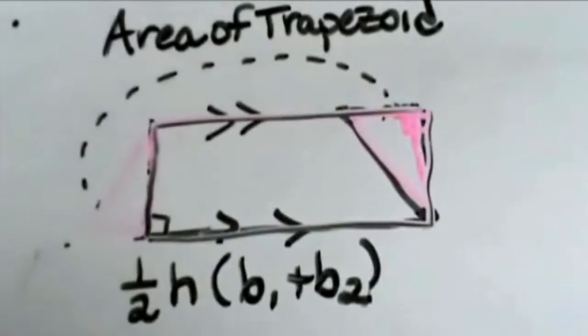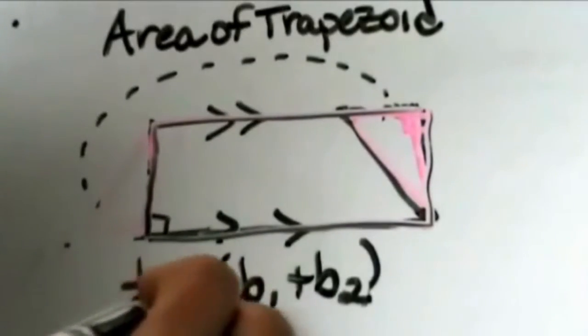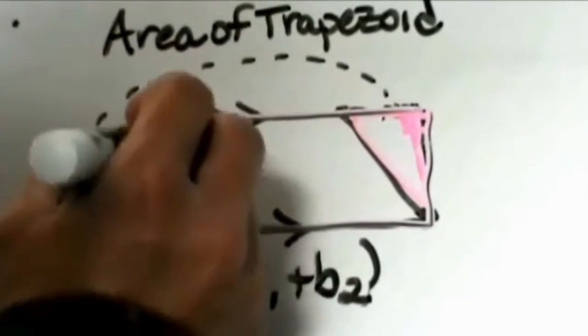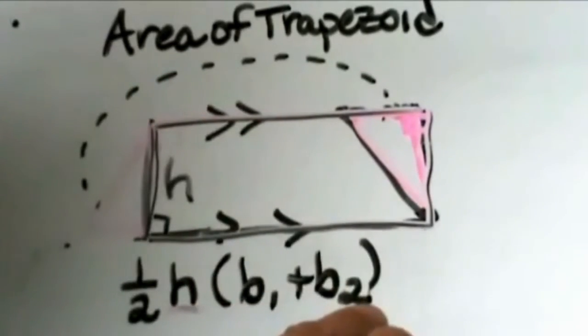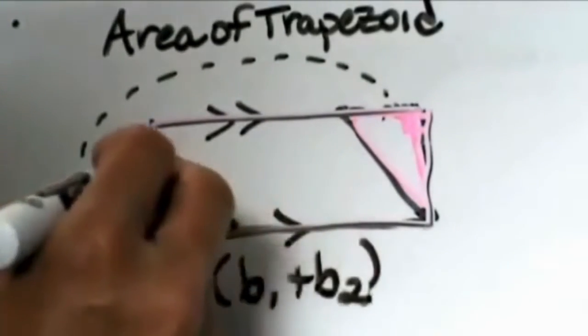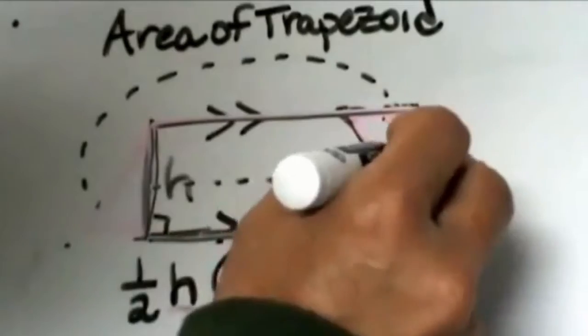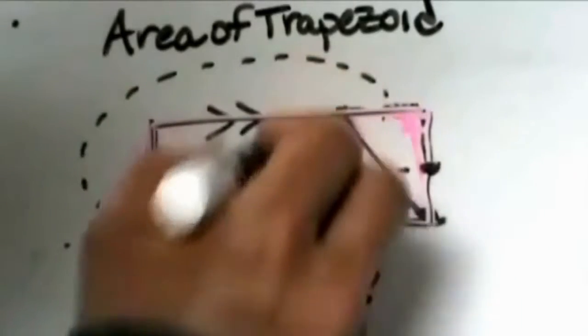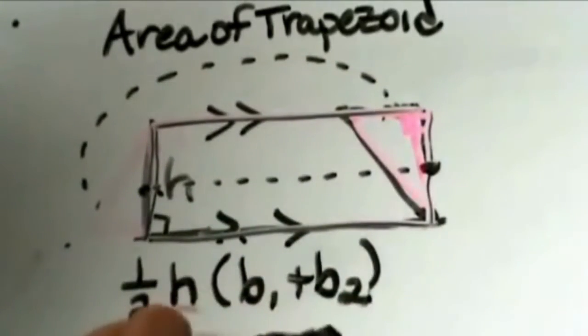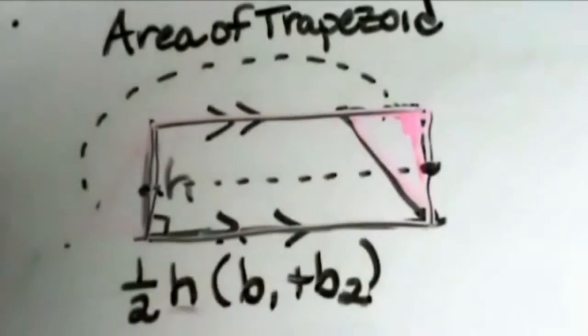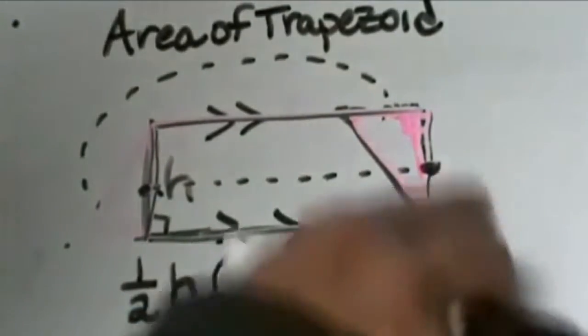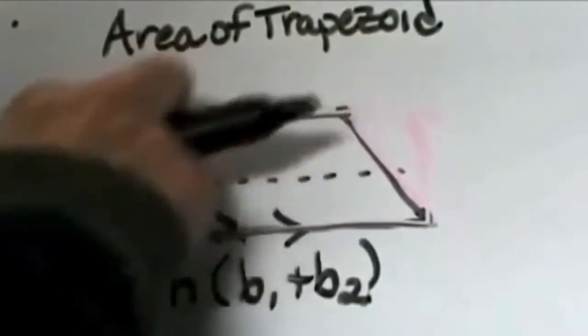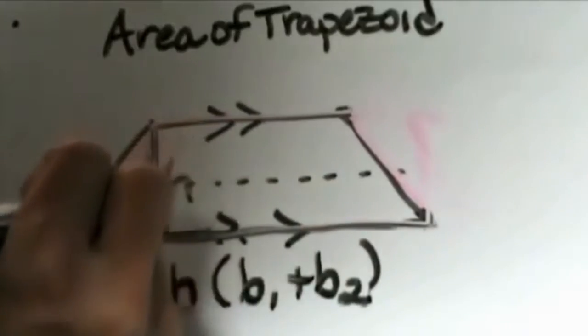Now we've created a figure with the same area. The height is actually this height here and the bases are now equal to each other and they equal what we call the mid segment, which is the distance from here to here, which is this new rectangular base. So we multiply the base times the height to get the area. But these two bases added together and divided by two, or multiplied by half, averages the bases, and that's where the formula comes from. The mid segment times the height. Let's put some numbers in here so you can see exactly what's happening with the formula.